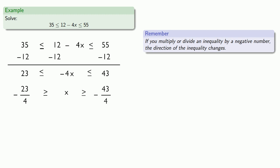Now while this is a perfectly good way to leave our answer, one of the things we like to do is to read our inequalities so that they increase as we go from left to right. So let's rearrange this, where we've reversed our inequality so it reads negative 43 fourths less than or equal to x, which must also be less than or equal to negative 23 fourths.